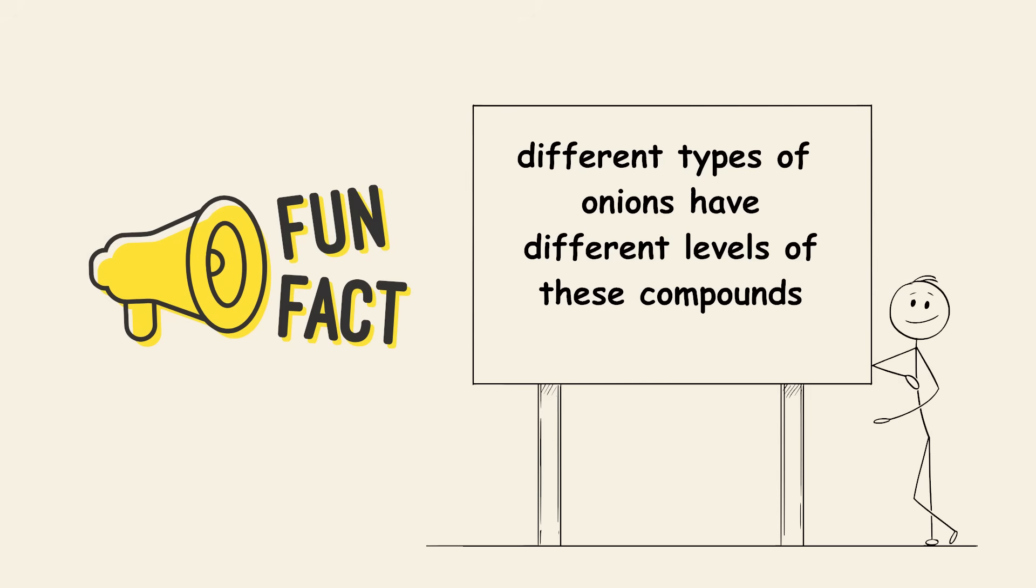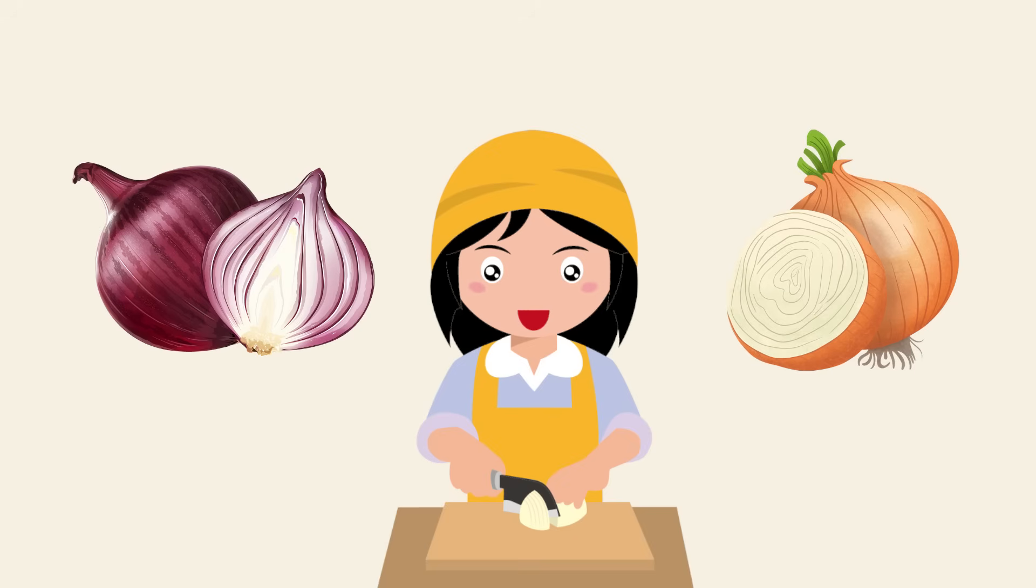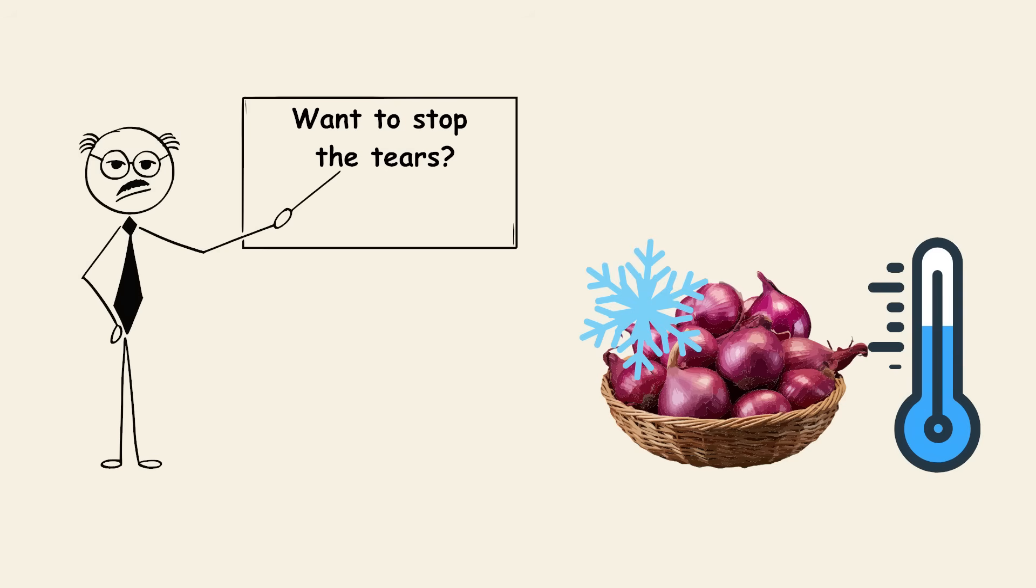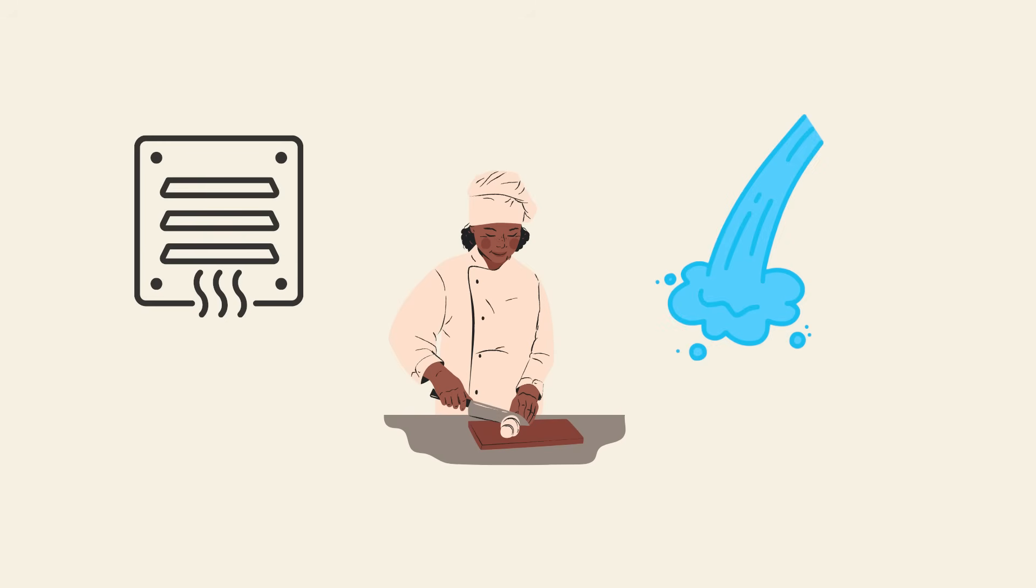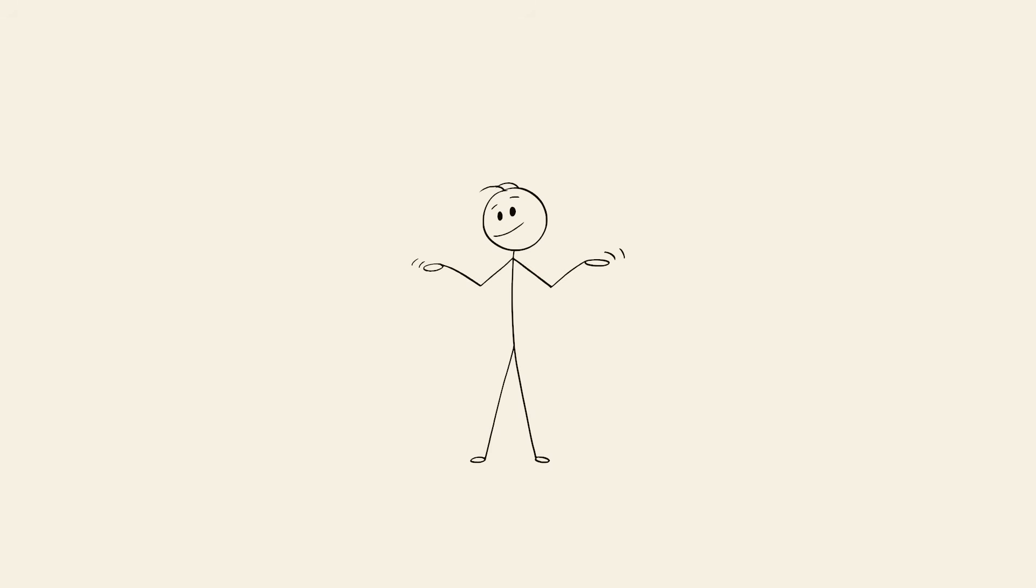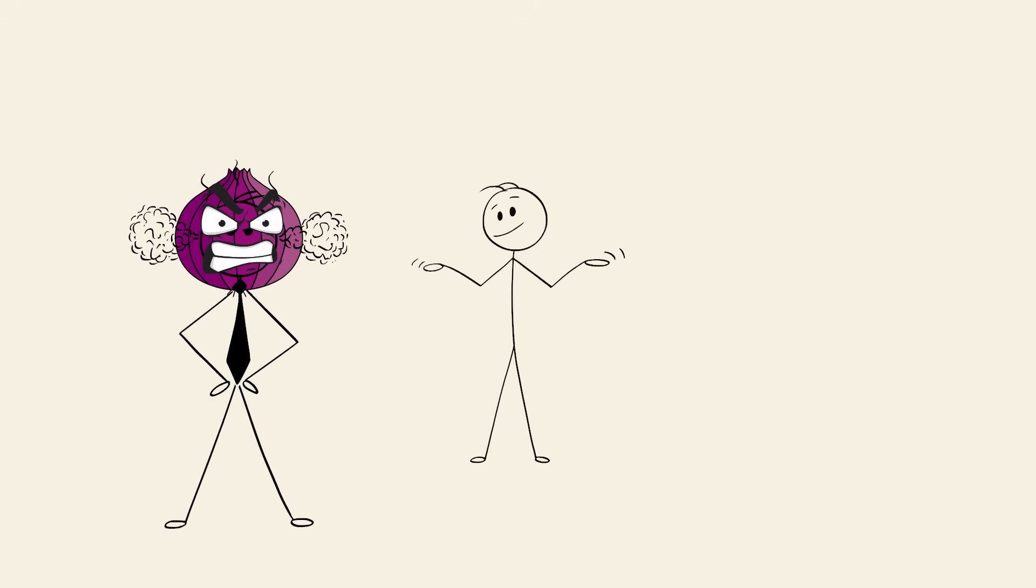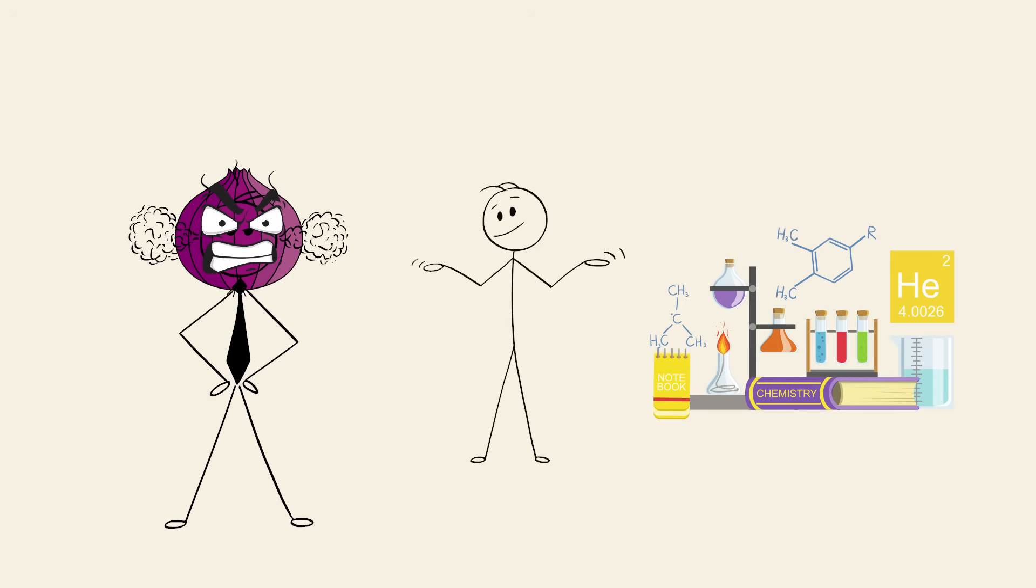Fun fact: different types of onions have different levels of these compounds. So red onions might not hit as hard as white ones. Want to stop the tears? Chill your onions before cutting. They release less gas when cold. Or cut under a vent or near running water to help whisk the gas away. So no, it's not personal. The onion isn't mad at you. It's just basic chemistry doing its thing.